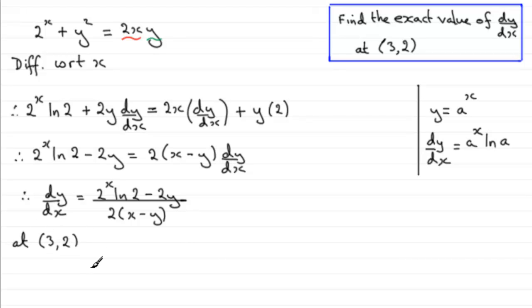All we need to say is dy/dx equals, and then we just substitute our value for x as 3 and value for y in as 2. We've got 2 to the power 3 multiplied by the natural log of 2 minus 2 times y, 2 times the y value of 2, and that is all divided by 2 times x, which is the 3, minus the y value, which is the 2.